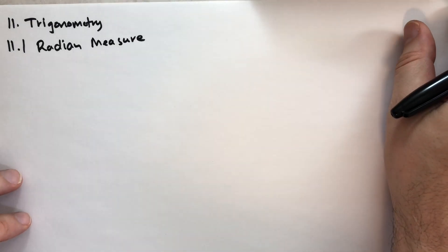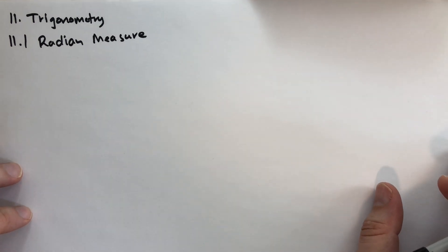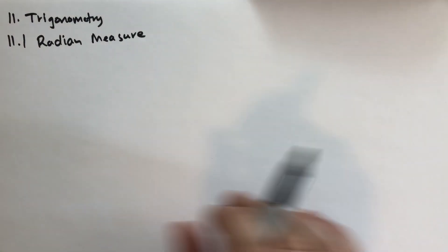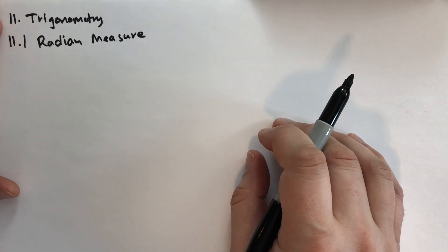You can approach trigonometry if you just have a little basic understanding of geometry. It really doesn't take much. Trigonometry is, after all, the study of triangles and how to measure them. And in this section, 11.1, we're going to cover something called radians.